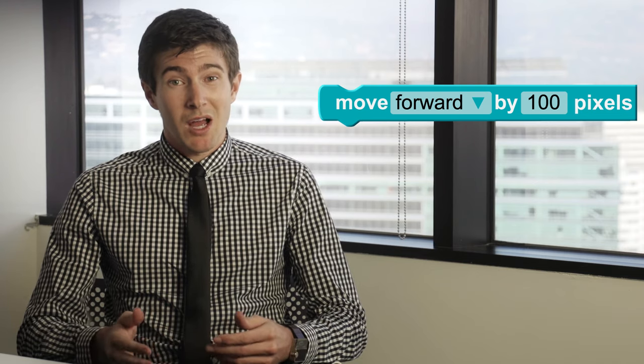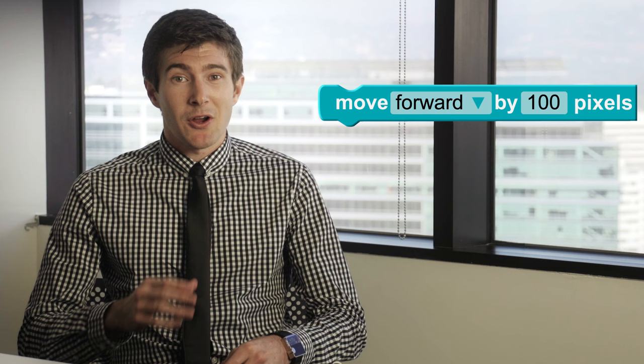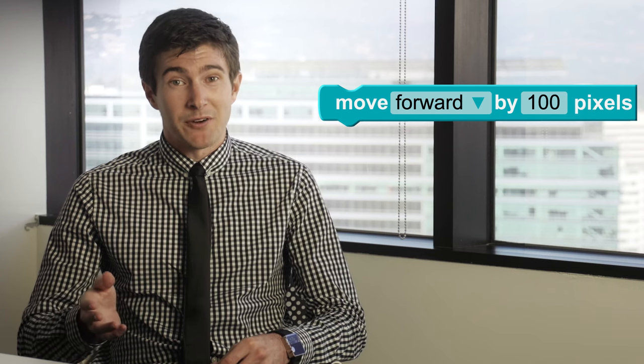When we hit run, what happens? The artist moves forward a certain amount and that amount is 100 pixels. Pixels are basically very tiny squares on your computer screen.